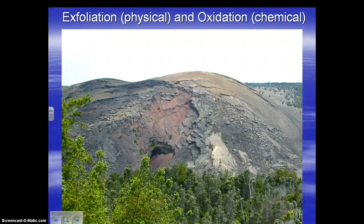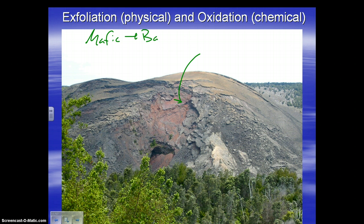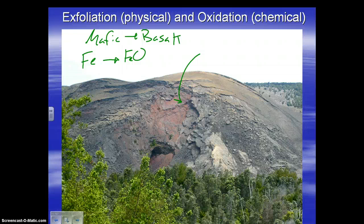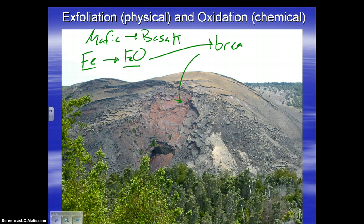There's also something else going on in that Hawaii image. There's a lot of red, which indicates that in this mafic rock — specifically basalt, since Hawaii is mostly igneous rock from the hot spot — the iron (Fe) is turning into iron oxide. Over time, with exposure to oxygen in the air and the rain and water seeping through the rock, the iron oxidizes. This causes the rock to break down, which is why this is a form of chemical weathering.